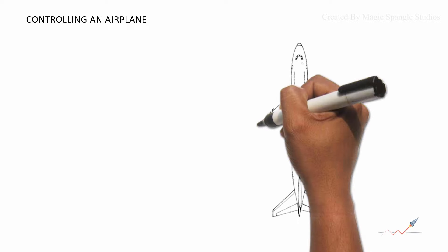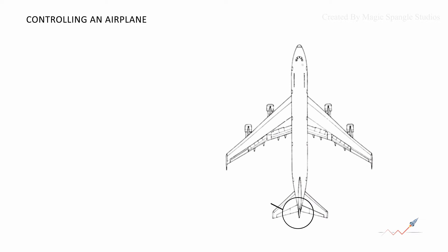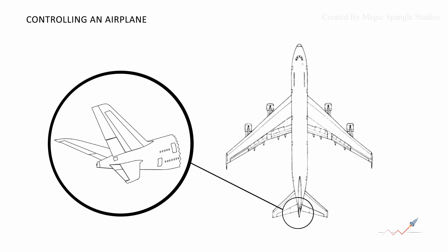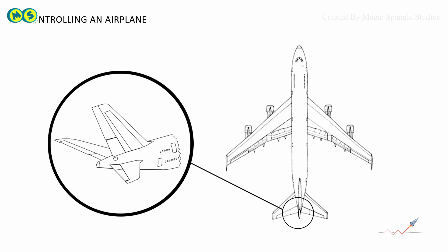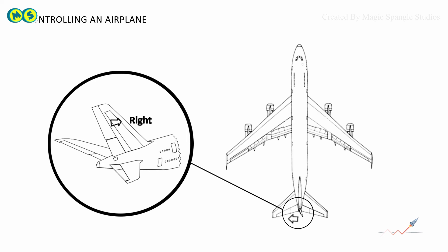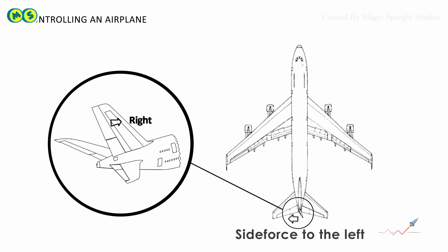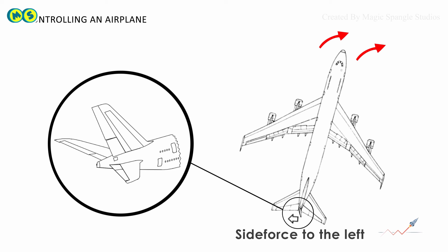The rudder can be deflected to either side to produce a change in the side force produced by the vertical tail. If the rudder is deflected towards the right, it creates a side force to the left, which causes the nose to yaw to the right.